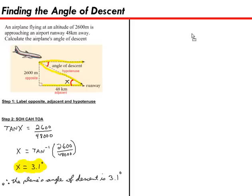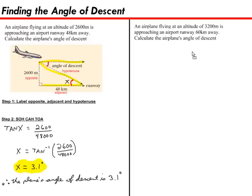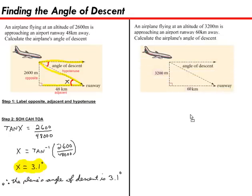And now it's your turn to try finding the angle of descent. So try using the same steps I showed you on this problem. An airplane flying at an altitude of 3,200 meters is approaching an airport runway 60 kilometers away. Calculate the airplane's angle of descent. And let's give you a diagram that looks like that. Okay, so go ahead and try that one. And I'll post a solution when you're ready.